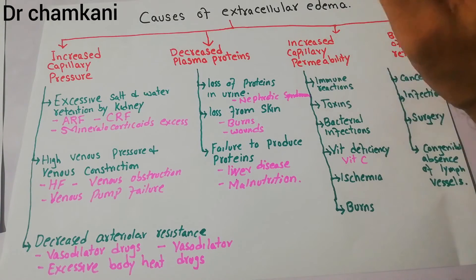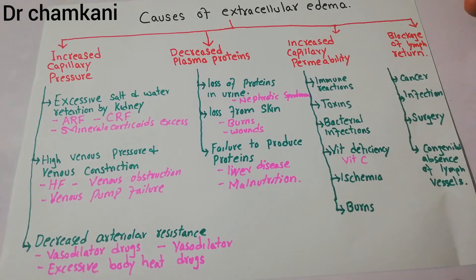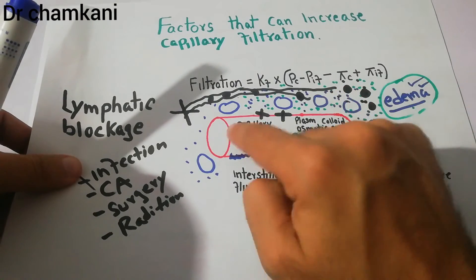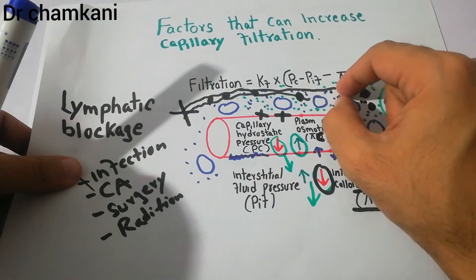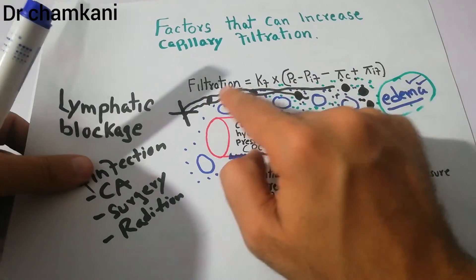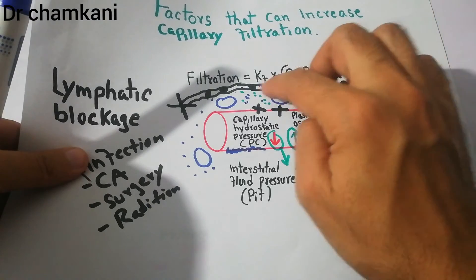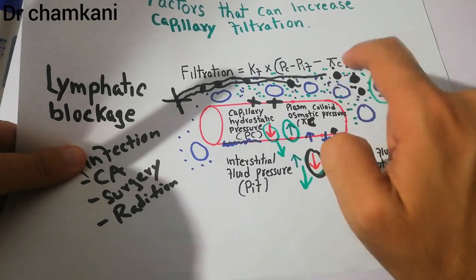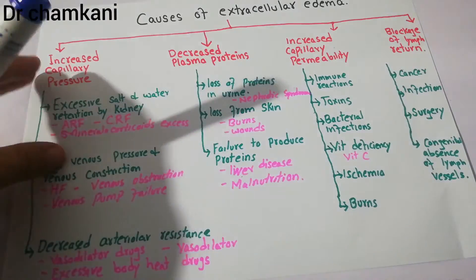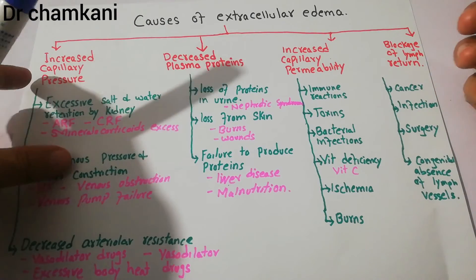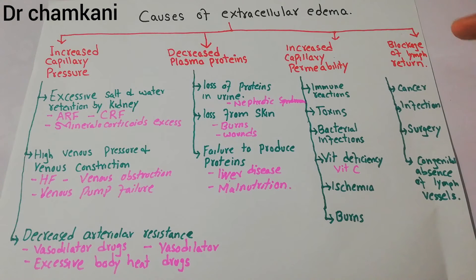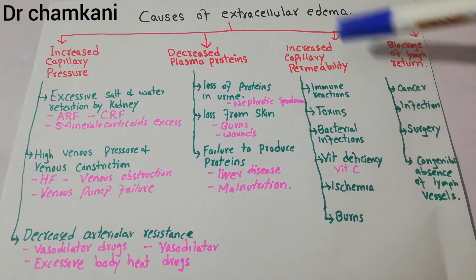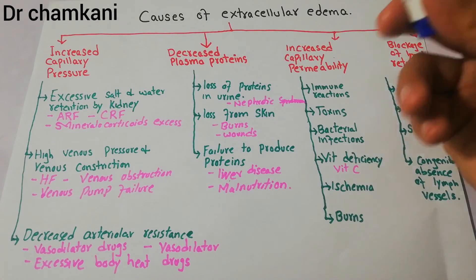Finally, blockage of lymphatic return can cause edema. Large fat and protein particles that cannot enter the capillary are transported through lymphatic vessels. If these vessels are blocked, these proteins remain in the interstitium, increasing interstitial fluid colloid osmotic pressure, which pulls fluid from the capillary lumen into the interstitium and causes edema. Factors causing lymphatic blockage include cancer, infection in the lymph vessels, surgical damage to lymphatic vessels, and congenital absence of lymph vessels.